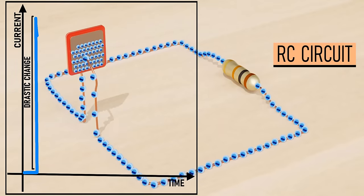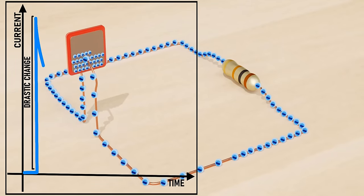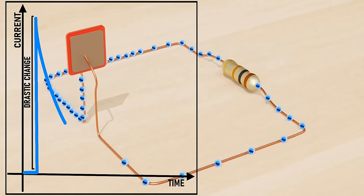Here you can observe that initially, the current flow is at the maximum, and then it sharply decays with time. This is expected because at the beginning, the charge difference is at the maximum, so the current has to be at the maximum.